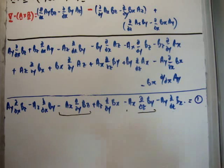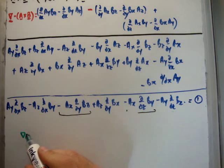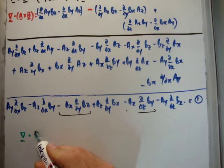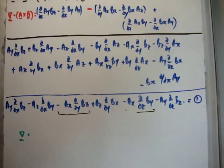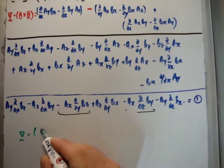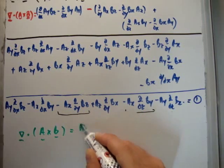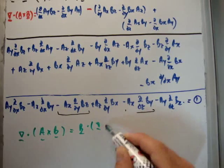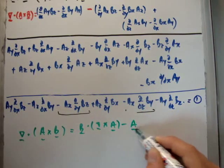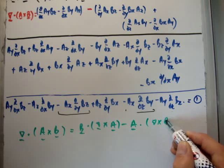So putting it all together, what we have miraculously, I suppose, is that if you take the dot product between your nabla operator and the cross product of a and b, you're going to get b dot the curl of a minus a dot the curl of b.